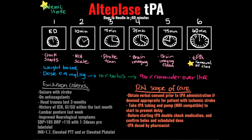Things that would exclude a patient from TPA include: a seizure associated with the stroke, being on any type of anticoagulants, head trauma within the last three months, a history of intracranial hemorrhage, GI or GU bleed within the last month, a lumbar puncture within the last week, or improved neurological symptoms — meaning they had a neurological deficit but en route to the hospital or during their hospital stay they appear to be improving. That would exclude them.